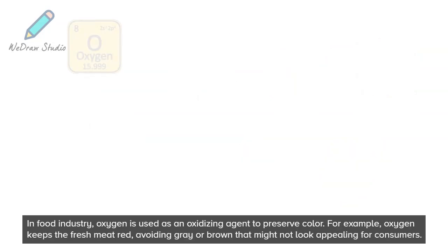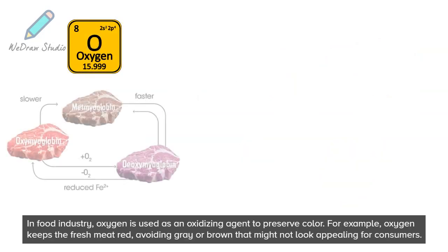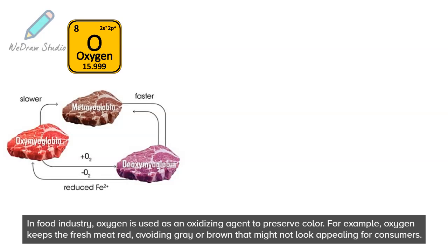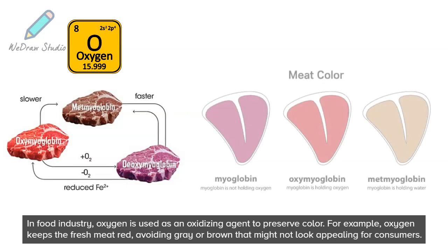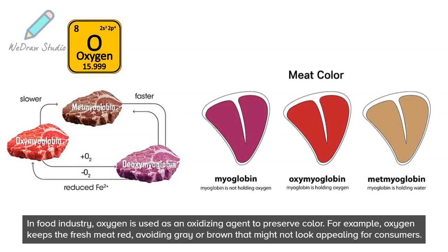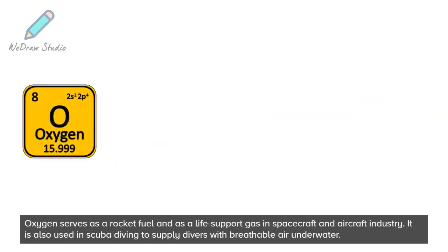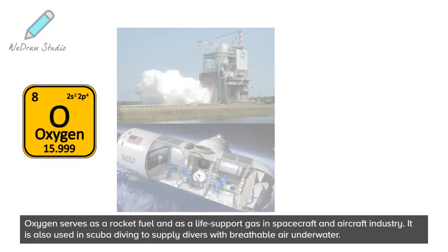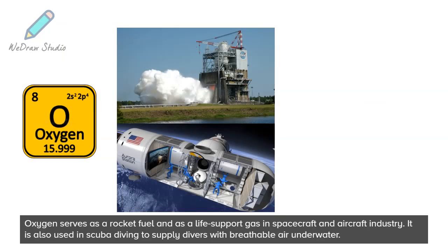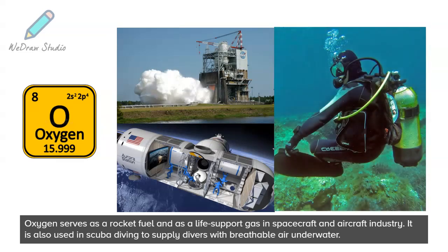In the food industry, oxygen is used as an oxidizing agent to preserve color. For example, oxygen keeps fresh meat red, avoiding the gray or brown that might not look appealing to consumers. Oxygen also serves as a rocket fuel and as a life-support gas in spacecraft and aircraft, and is used in scuba diving to supply divers with breathable air underwater.